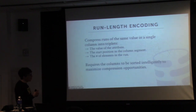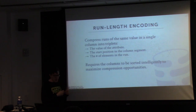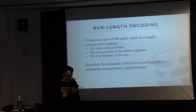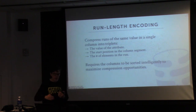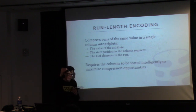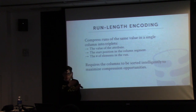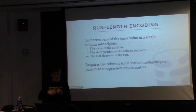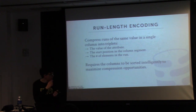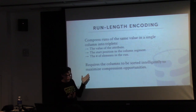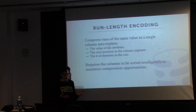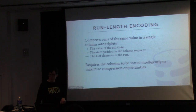Run-length encoding stores a triplet for runs of the same value: the value, the starting offset in the column, and the number of times it repeats, rather than storing the exact copy over and over. The best compression ratio for RLE comes from sorting your columns intelligently to maximize the length of different runs.